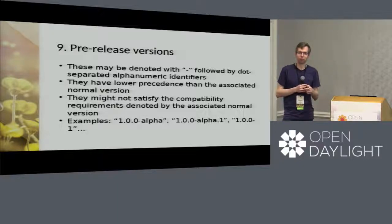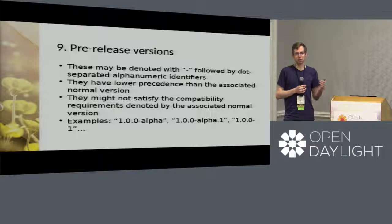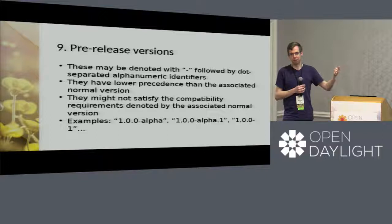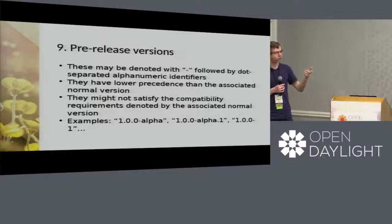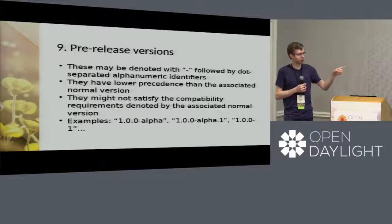Maven doesn't quite do semantic versioning — for example, Netty 4.0.33.Final is not a semantic version. Pre-release versions are sorted alphabetically, which works well for alpha, beta, and release candidates. You can add extra components separated by dots, and they sort later — so alpha comes before alpha.1. It's ASCII-based, so numbers come before alpha. Git hashes don't sort well for pre-release use; dates sort more predictably.